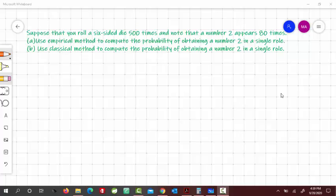In this video, we would compare empirical method and classical method by using this example. Suppose that you roll a six-sided die 500 times and note that a number 2 appears 80 times.